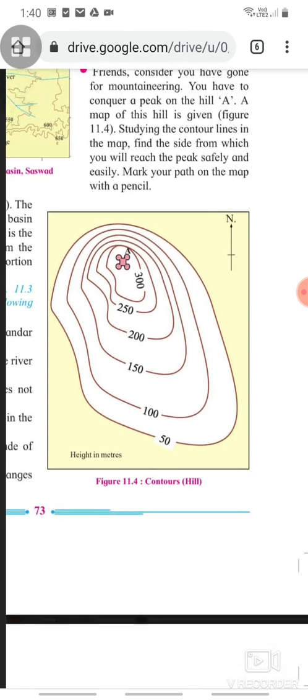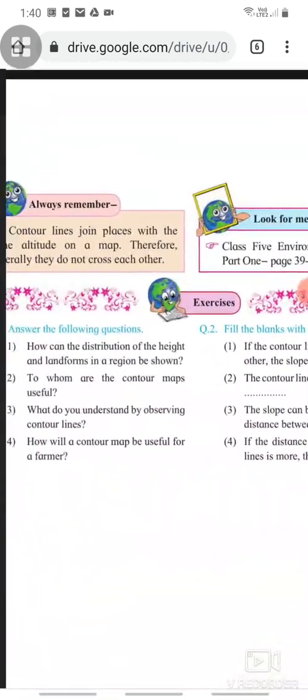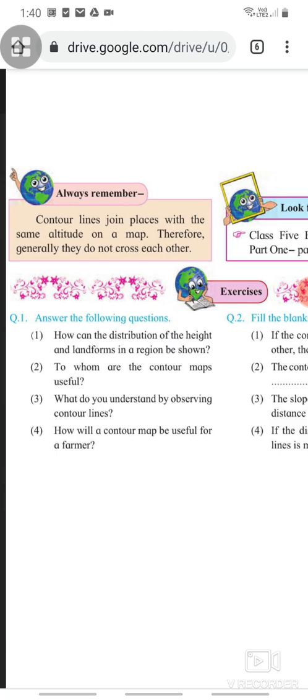Always remember that contour lines join places with the same altitude on a map. Therefore, generally they do not cross each other.